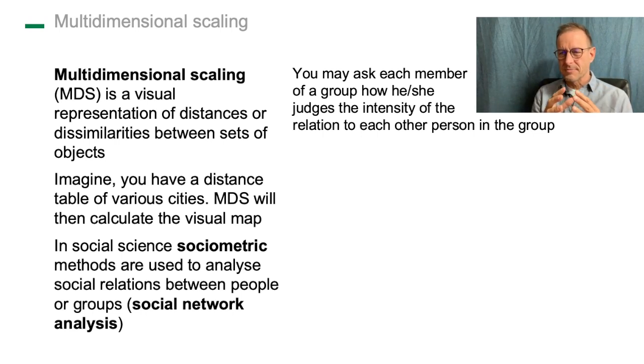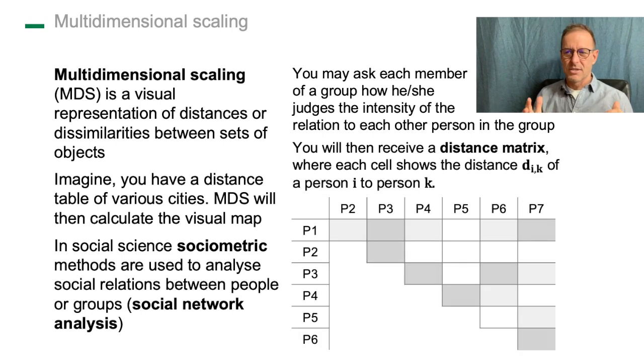When you do this kind of sociometric analysis, a typical result you get is also a distance matrix. I have one here. We have person one to seven, and what you see in this matrix is that the distance to these people might differ. To some people the relation is very close and to some it is very distant. When it's white there is no relationship at all, if it's dark or gray there is a close relationship.